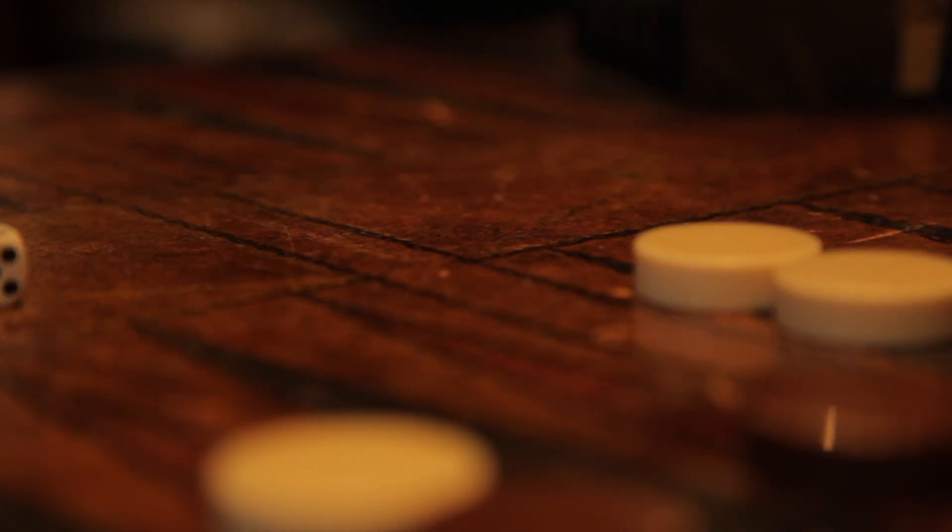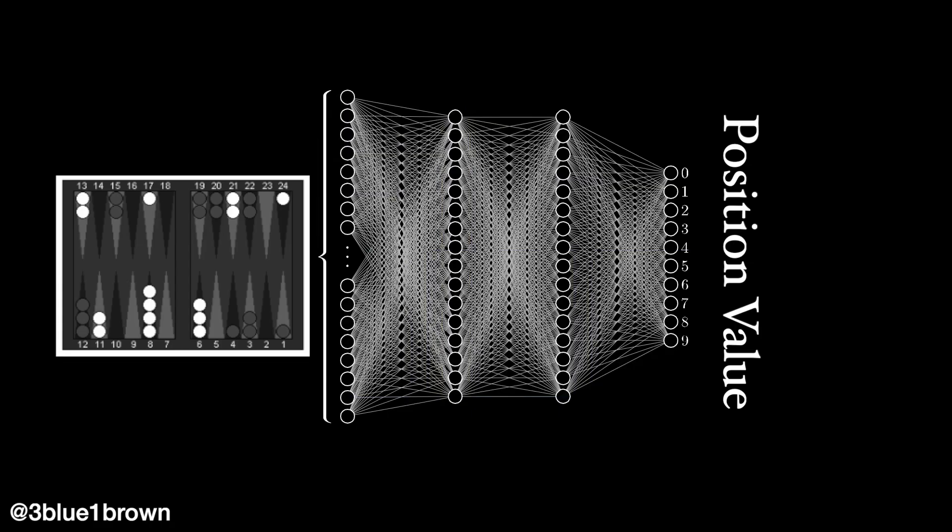He chose an even harder game of backgammon to advance research. Following Samuel's suggestion, instead of using human design features like piece count to define the value function, features would be patterns the network learned by adjusting connection weights between neurons.